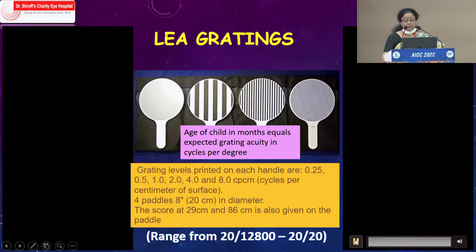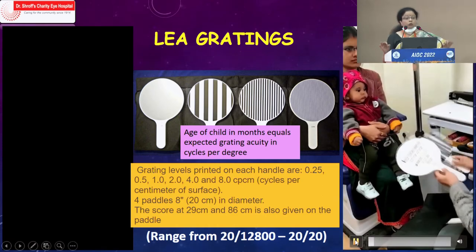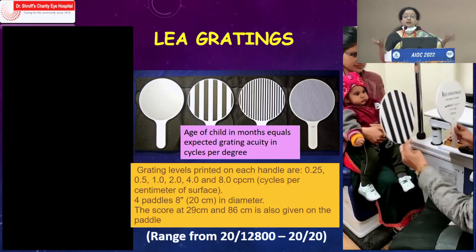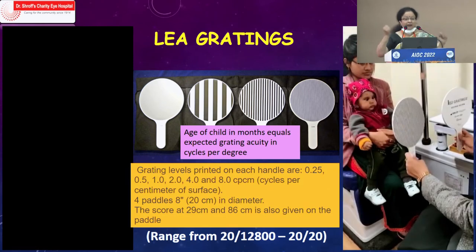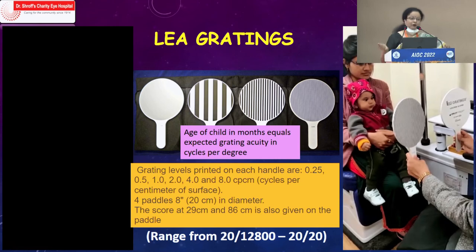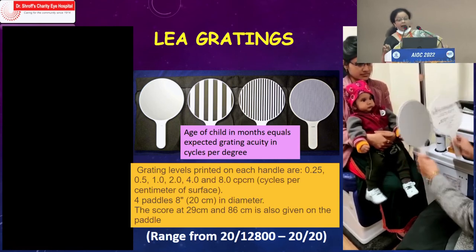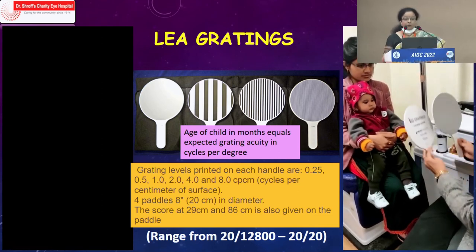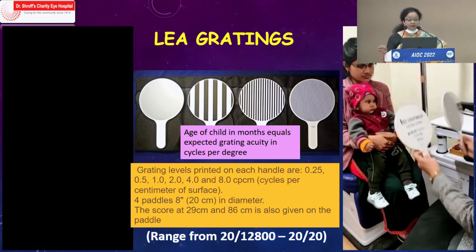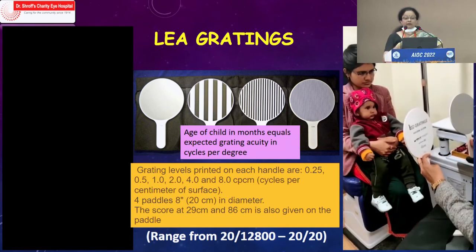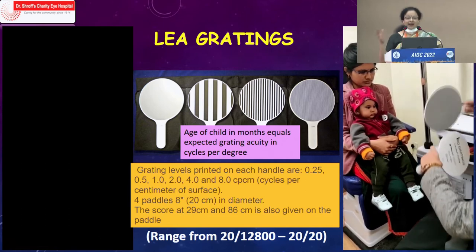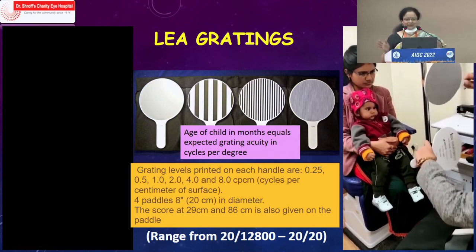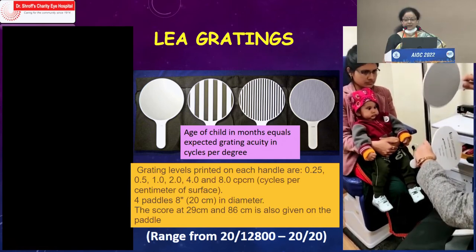We published a paper and found that the most common presenting feature in our series was strabismus — because most referrals came to us as strabismologists — though poor eye contact and poor visual response are more typical primary presentations. The most common etiology found was PVL, and our most common cause was hypoglycemia, which is preventable. Just one or two days without breast milk is enough to cause a hypoglycemic attack leading to CVI.